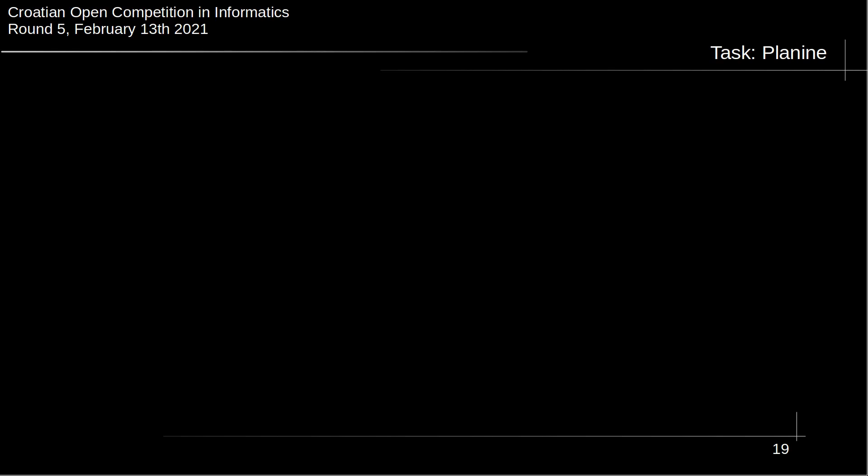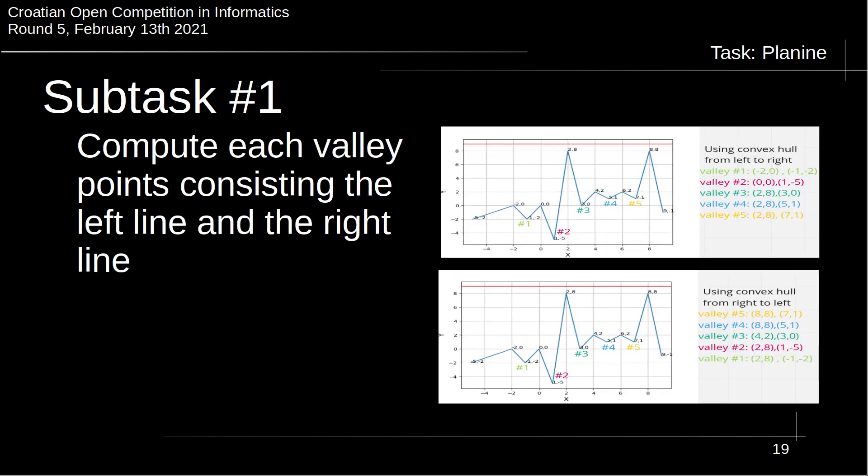In this section we will analyze the solution of the Planine task. Before we start, I strongly recommend going deep into the previous parts, especially the convex hull parts. Our solution to this problem can be divided into three subtasks. Subtask number one: compute each valley's points consisting of the left line and the right line.